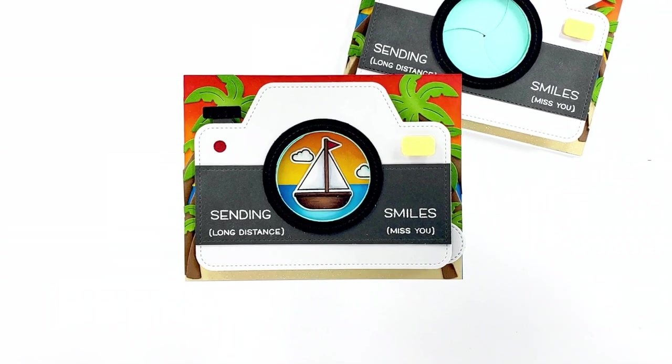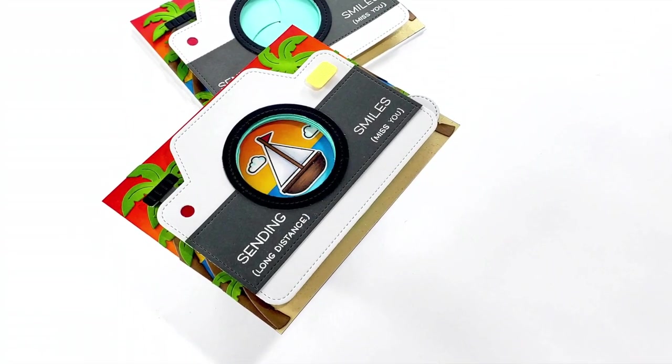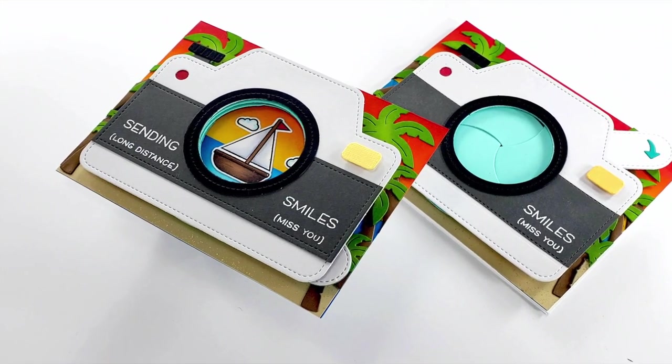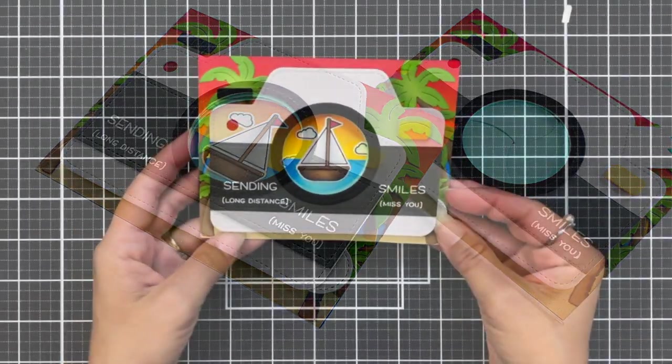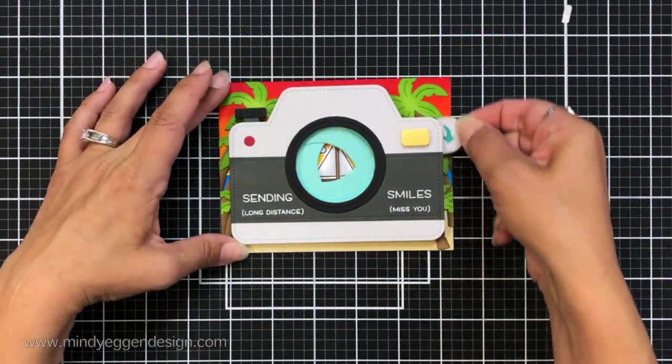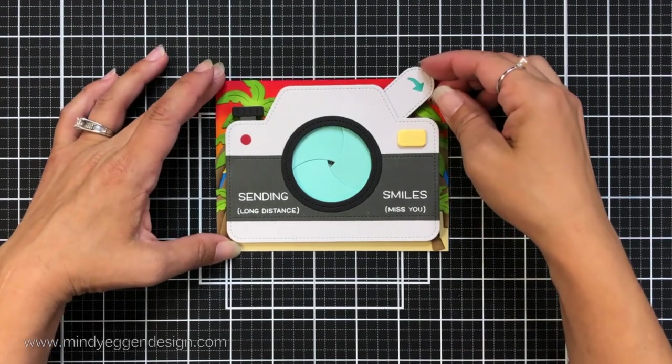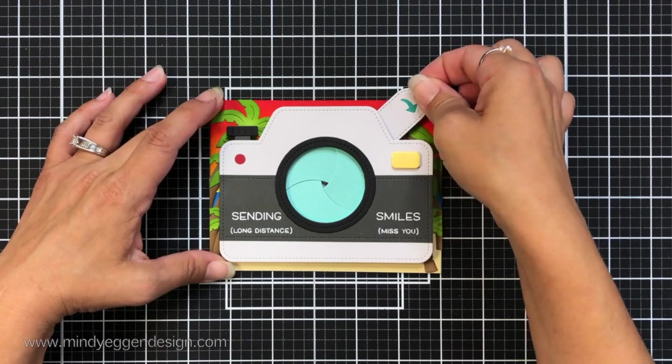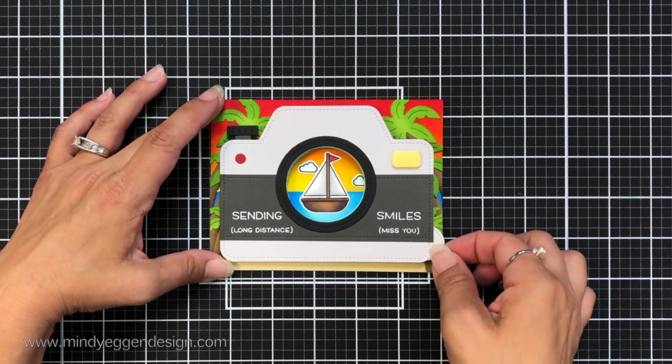Hi everyone and welcome back. This is Mindy Egan for Lawn Fawn and in today's video we are going to be making an interactive card using the Magic Iris and Magic Iris camera but with a tropical theme. This is what we are going to make - the interactive portion is opening up the camera to view this beautiful tropical scenery.